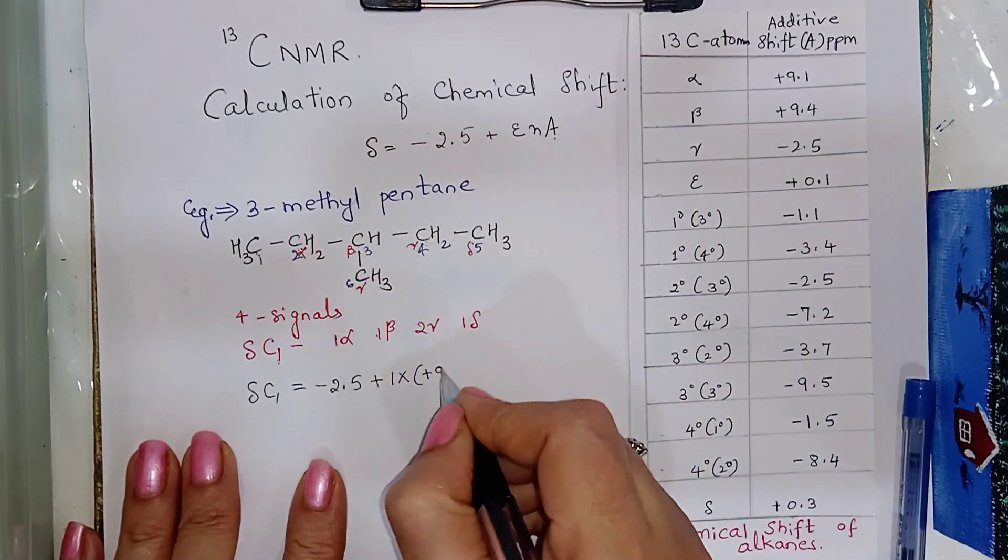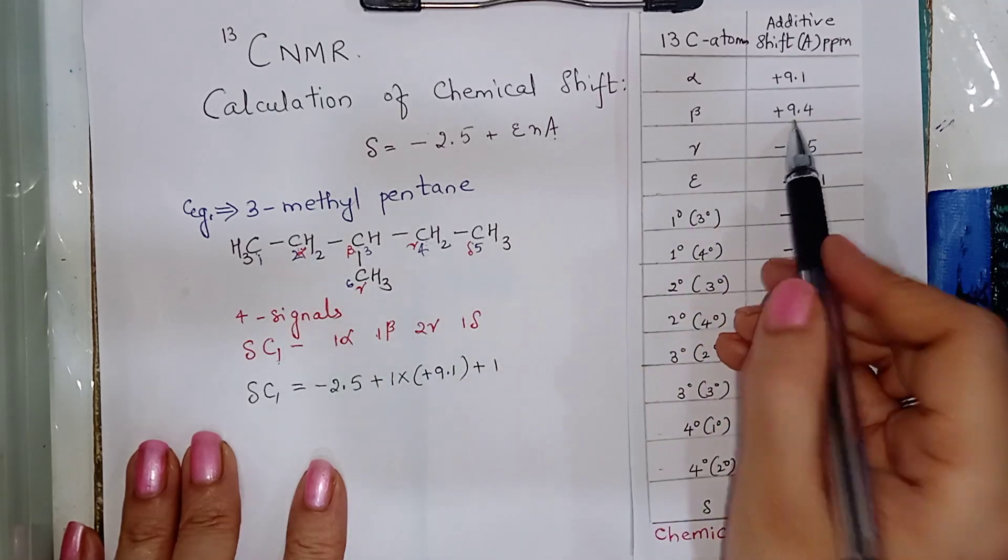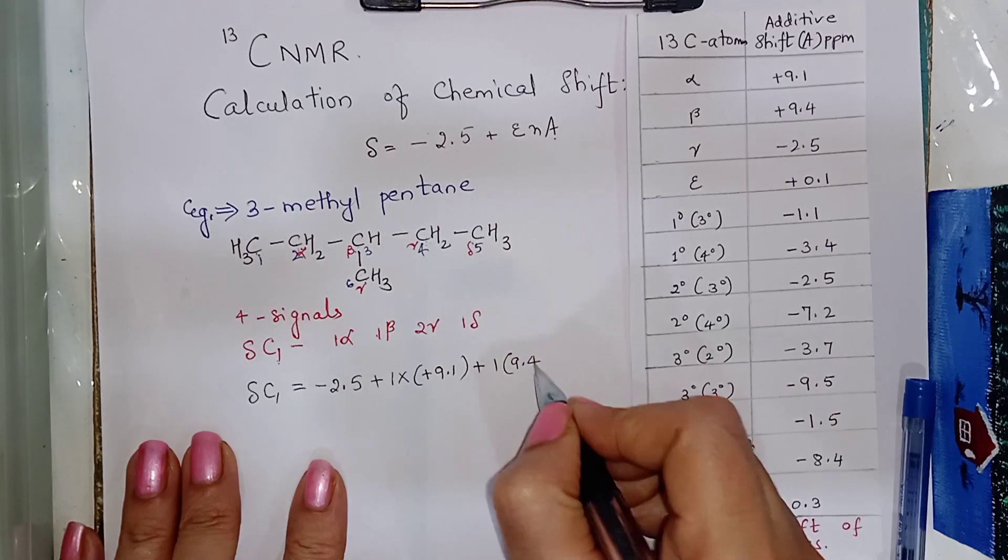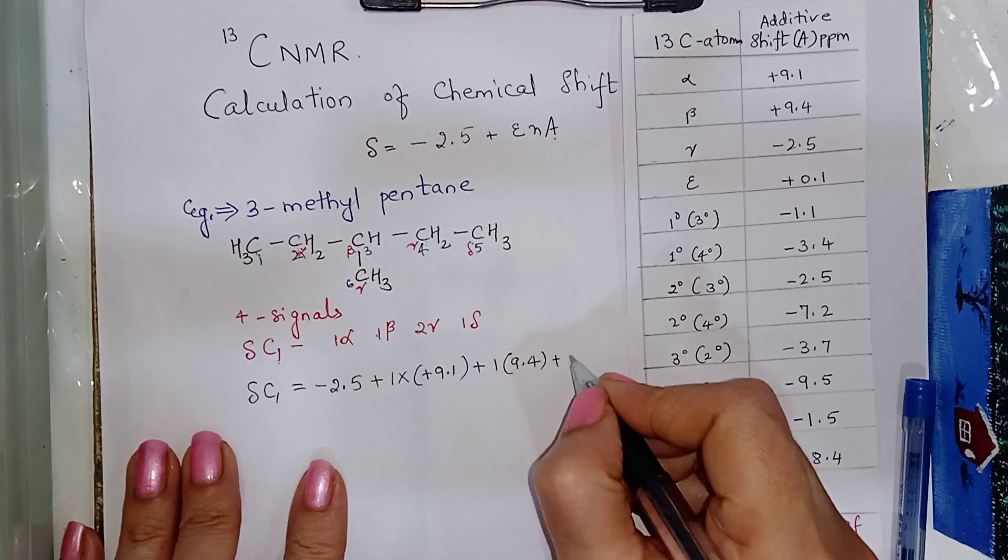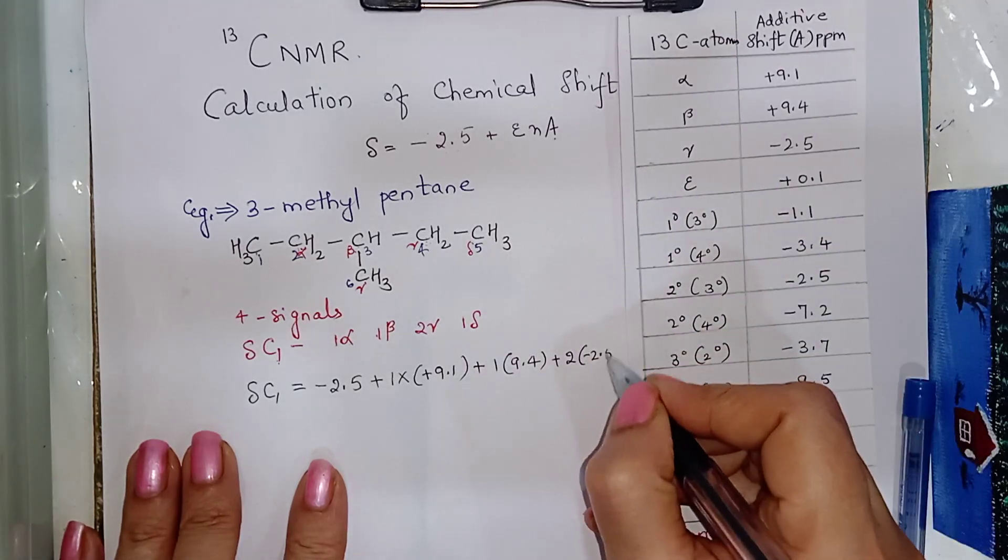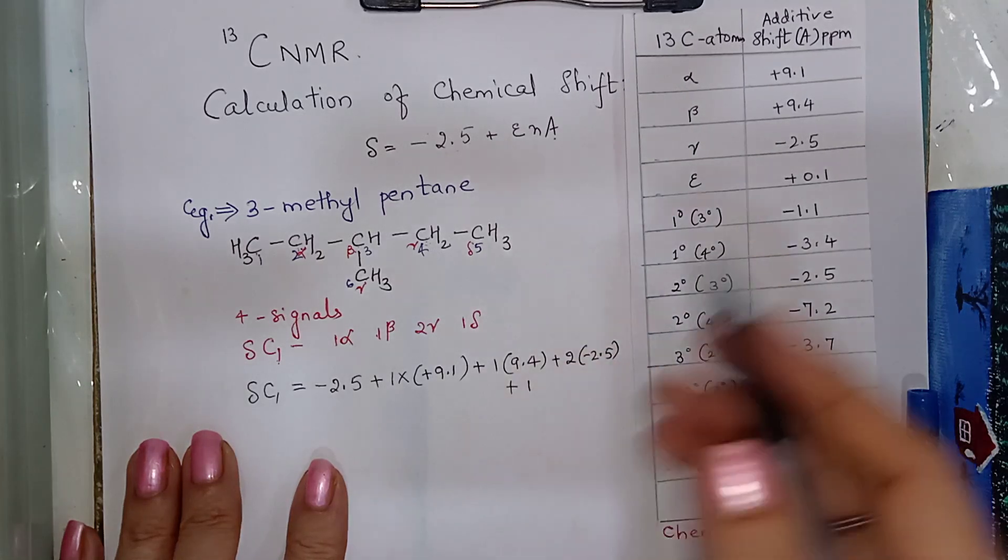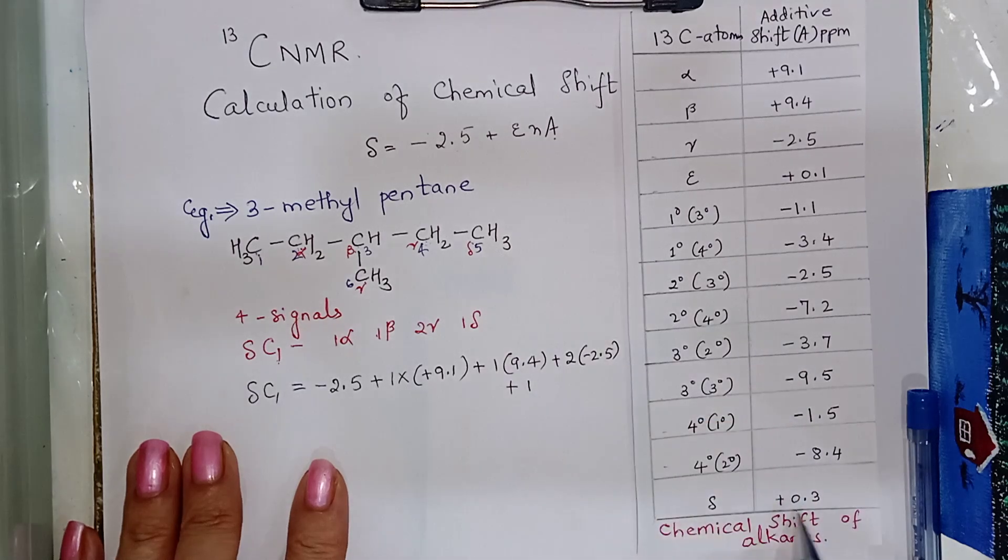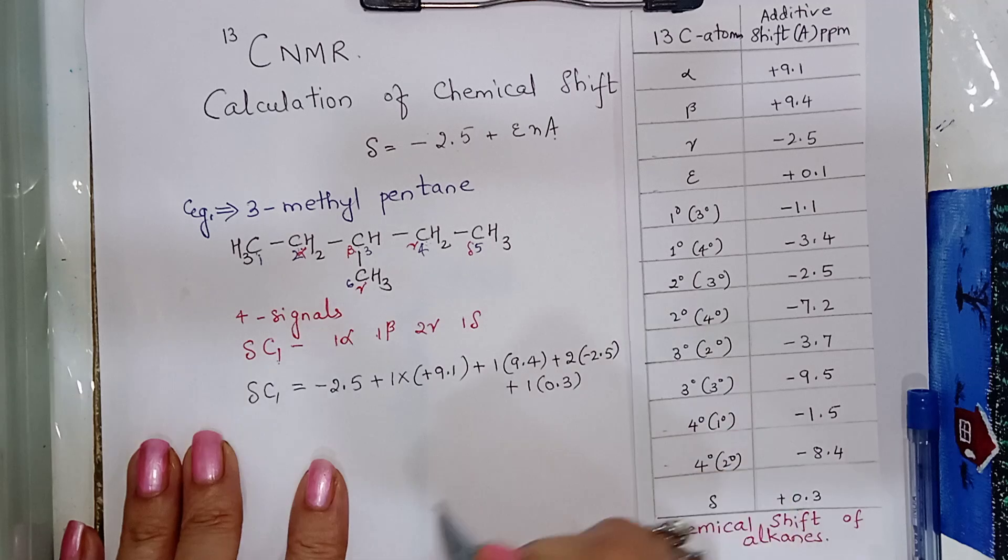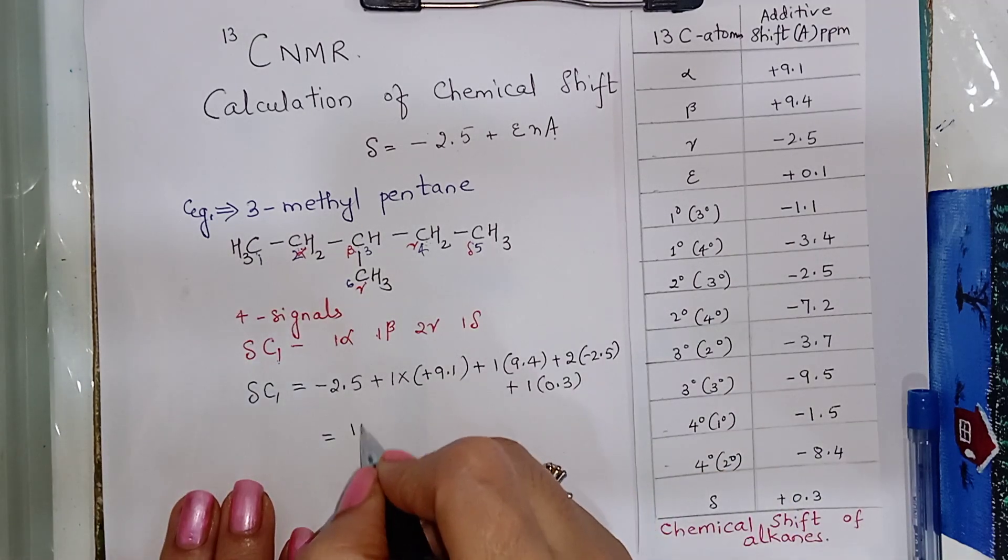plus 2 into gamma carbon is minus 2.5 plus 1 into delta carbon is 0.3. So, the value comes at 11.3.